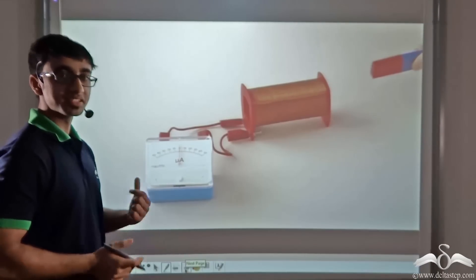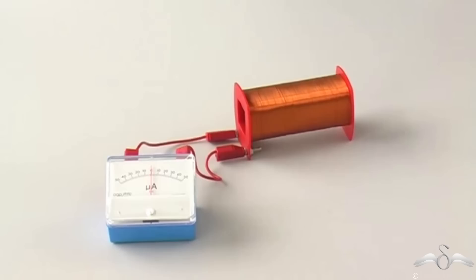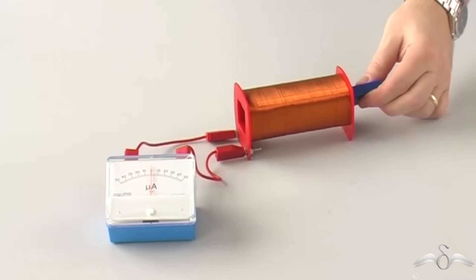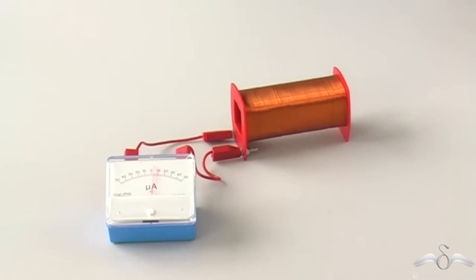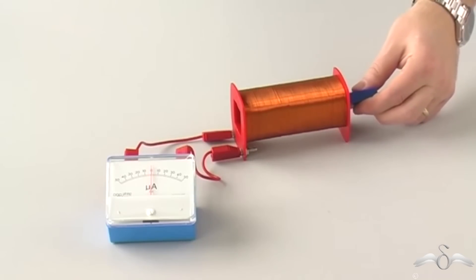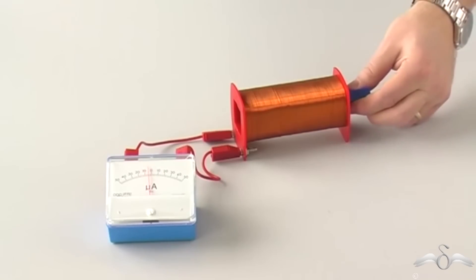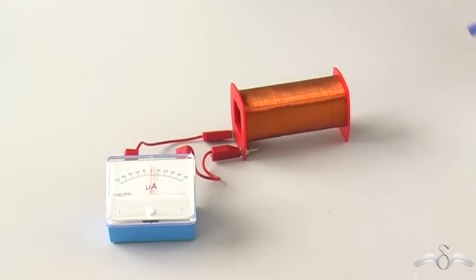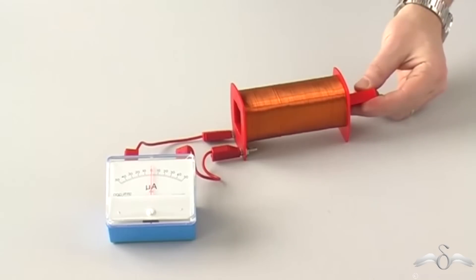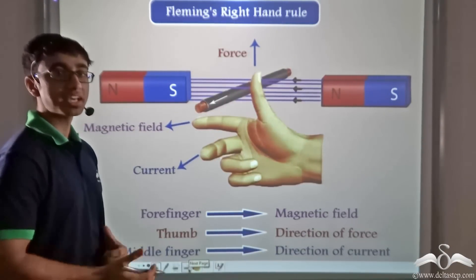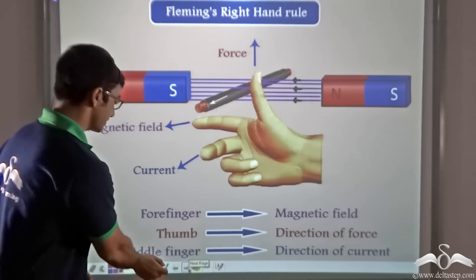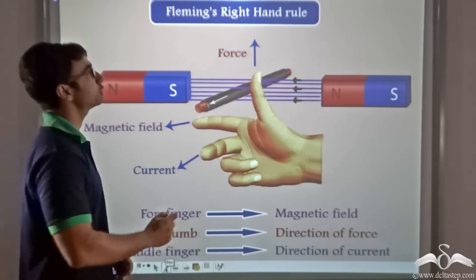Let us revisit the earlier video and notice one important aspect. The same experiment that Faraday conducted is being repeated. When the bar magnet is moved in, the galvanometer needle deflects toward one side. When the magnet is moved out, the needle moves to the opposite side. Now, instead of always using such an elaborate experimental setup to find the direction of induced current, there is an alternative rule. That rule was given by Fleming. We have studied Fleming's left hand rule; in this case, the direction of induced current can be found using Fleming's right hand rule.